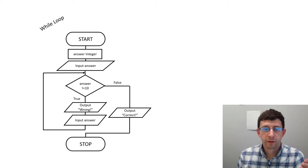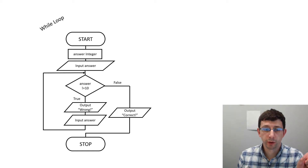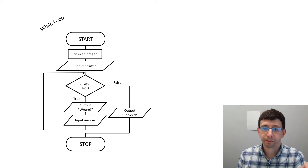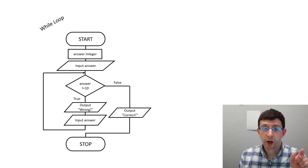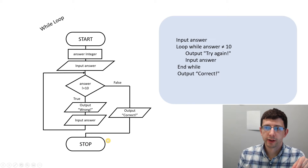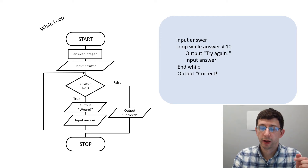If the user types in 5, for example, 5 is not equal to 10, which evaluates to true, so we continue downwards, output 'wrong', then ask for input again. The algorithm loops back to the beginning and checks again. If the user types 10, then 'not equal to 10' evaluates to false, so we exit the loop and output 'correct', then stop the program.